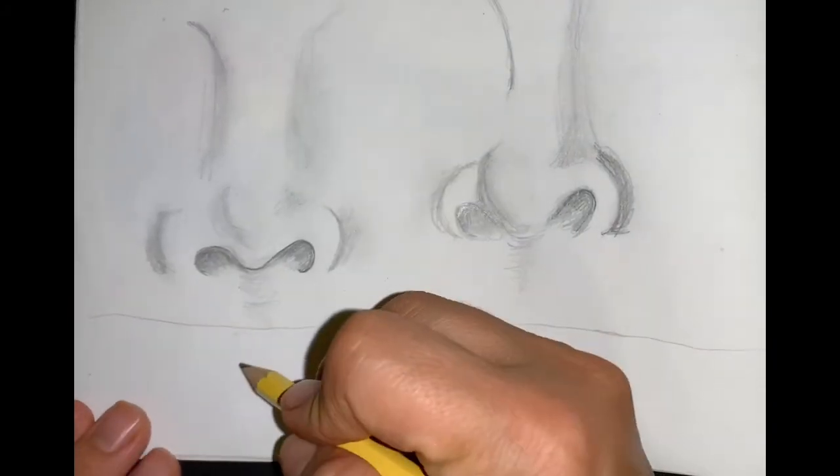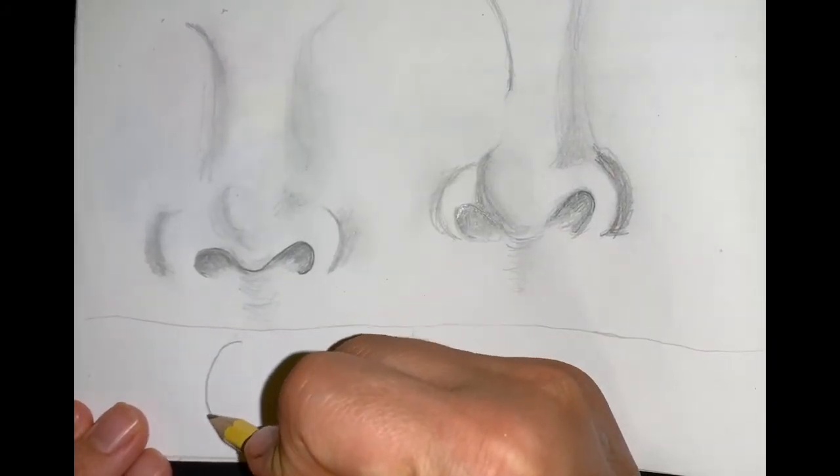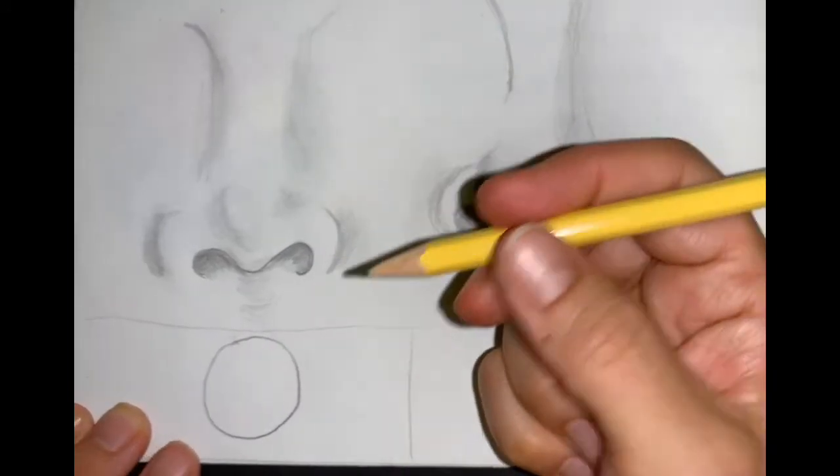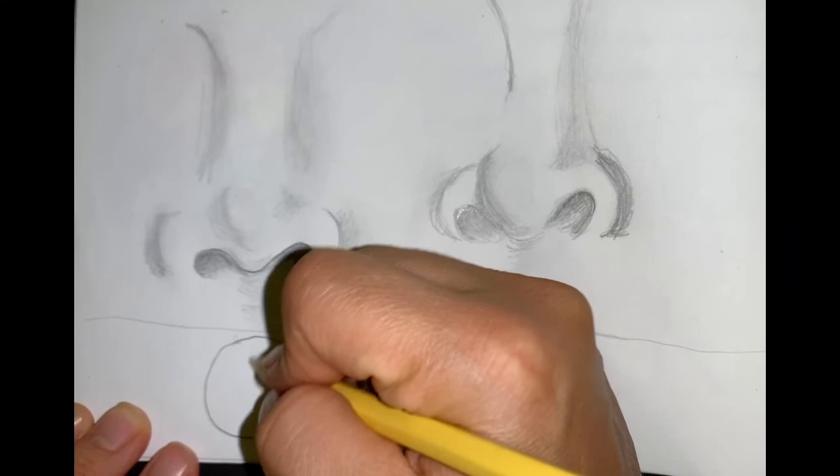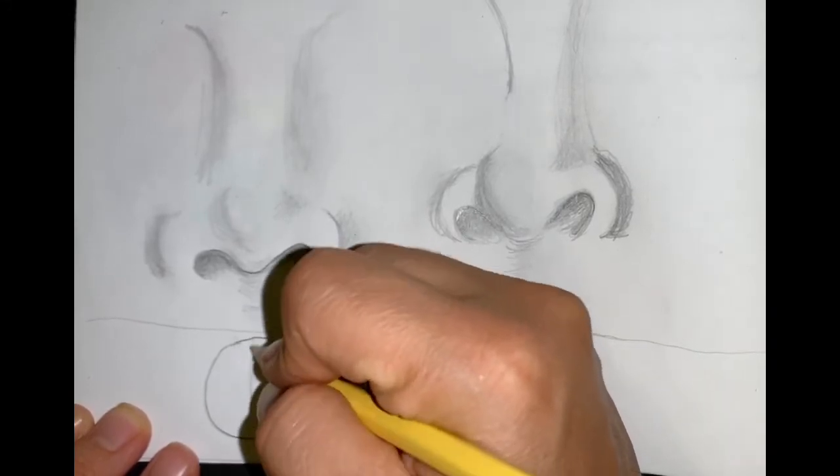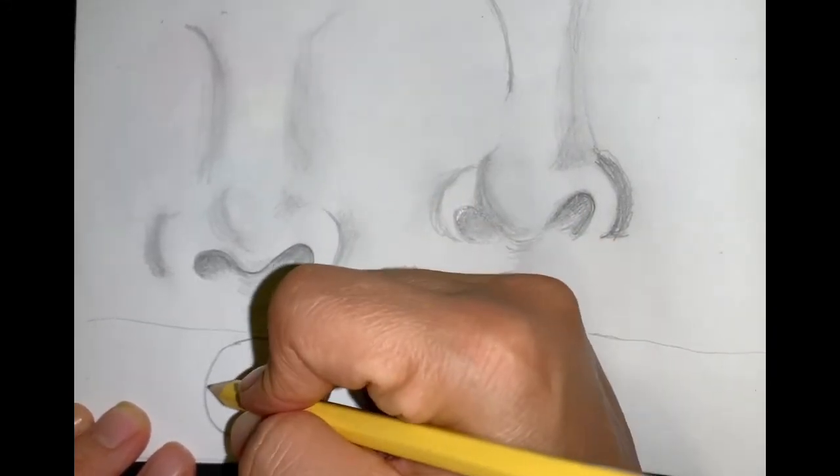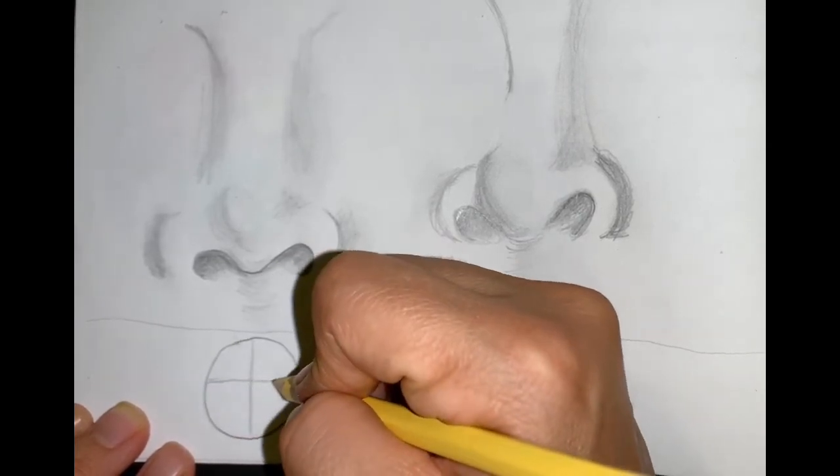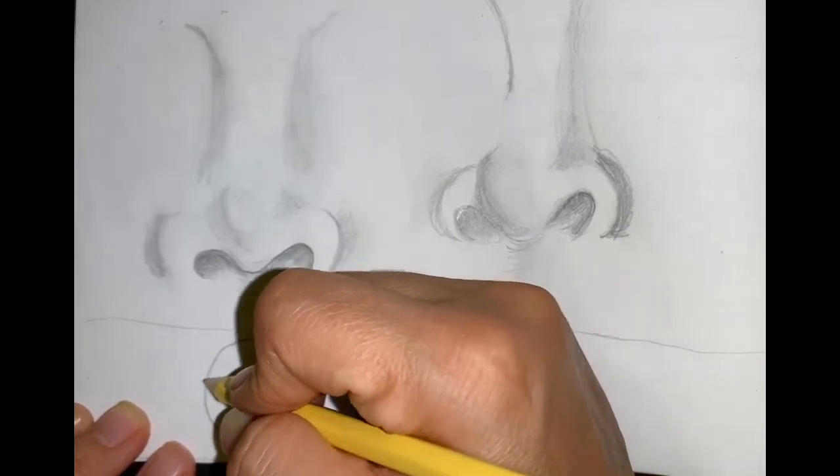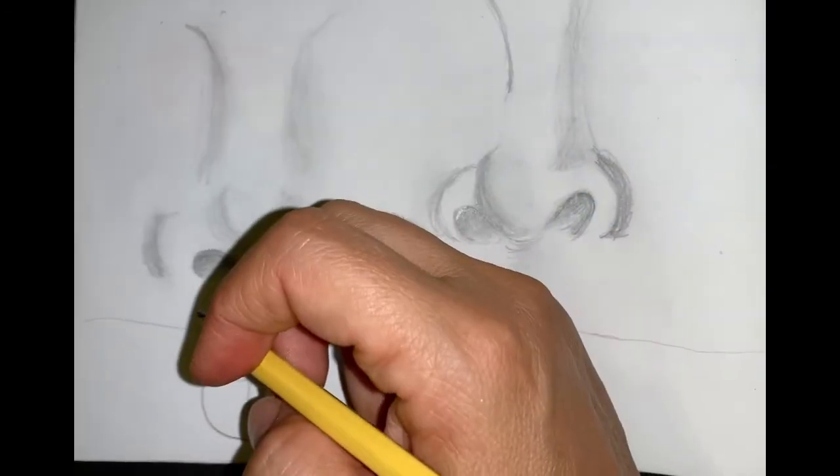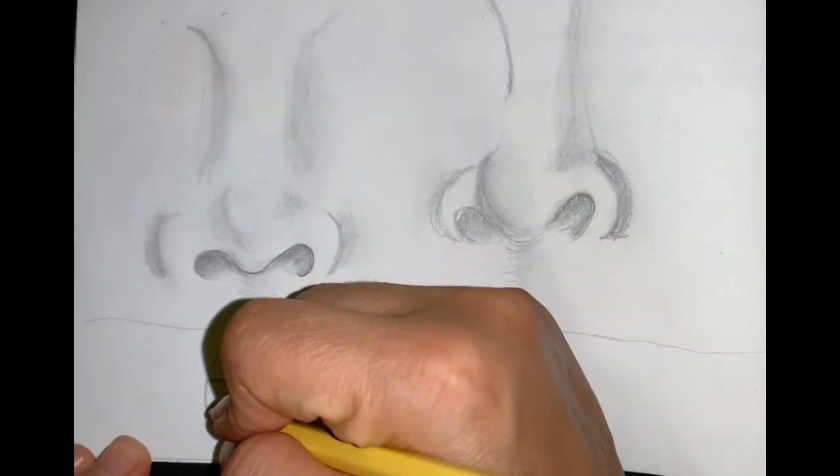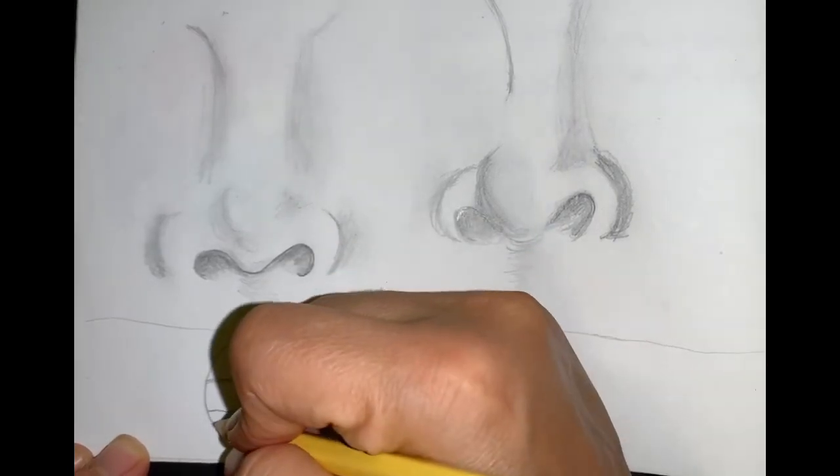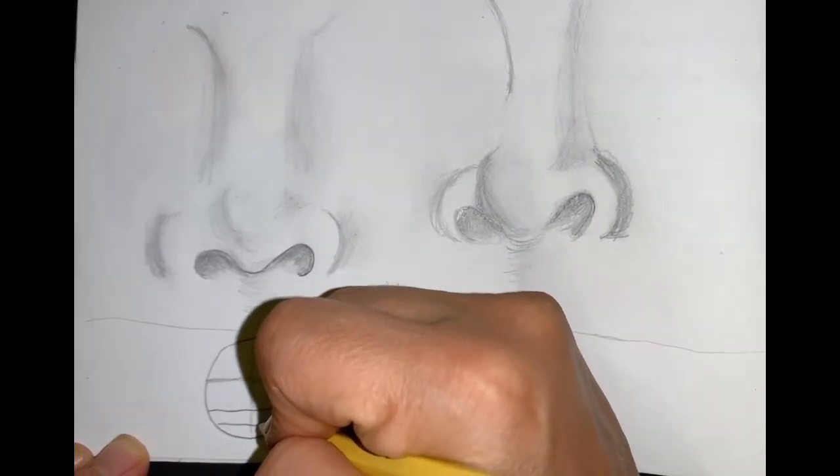Straight on, you're going to have an oval or circle, and split this in half this way, and then this way. Halfway down is where you would have your eyes. You're going to split that in half again, and this is where your nose would be. I'm just eyeballing it. Then halfway down from there would be where the mouth is.